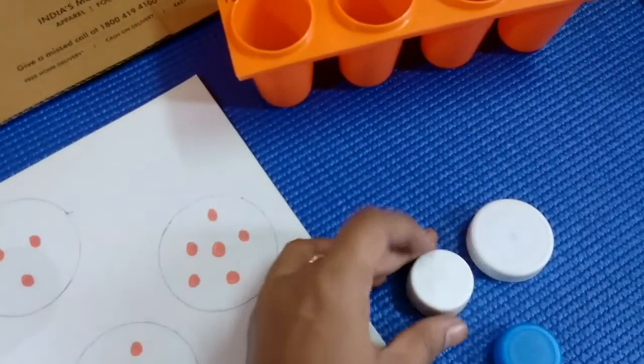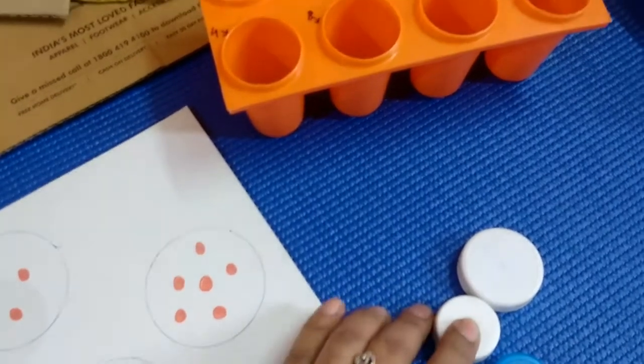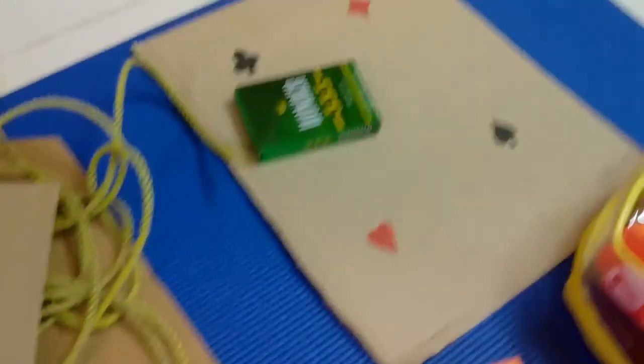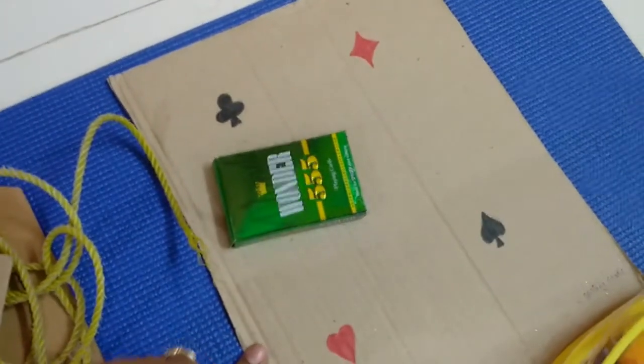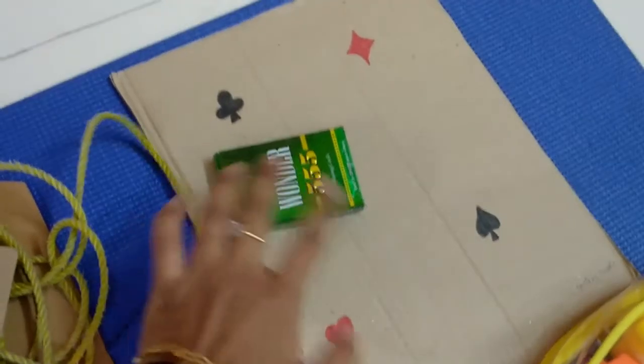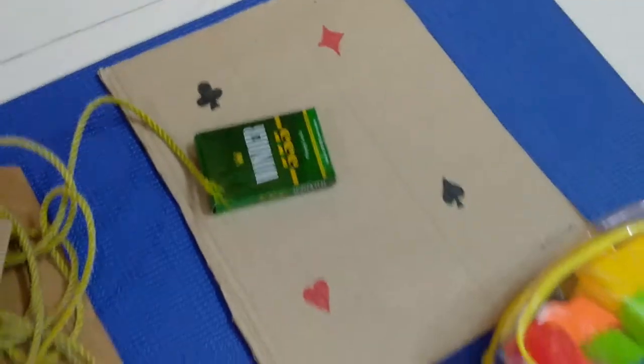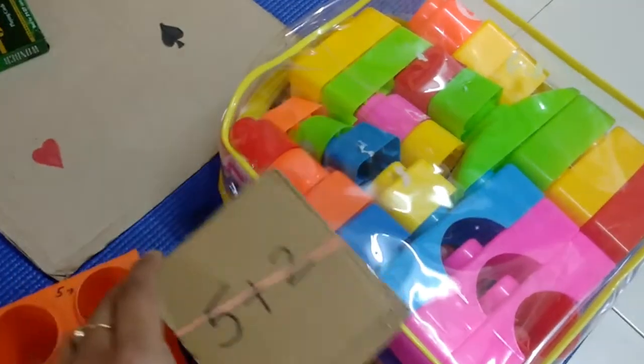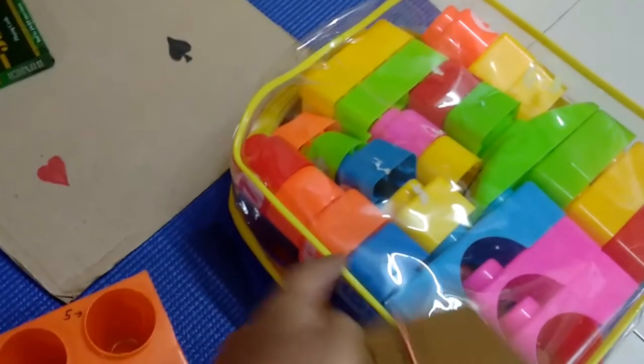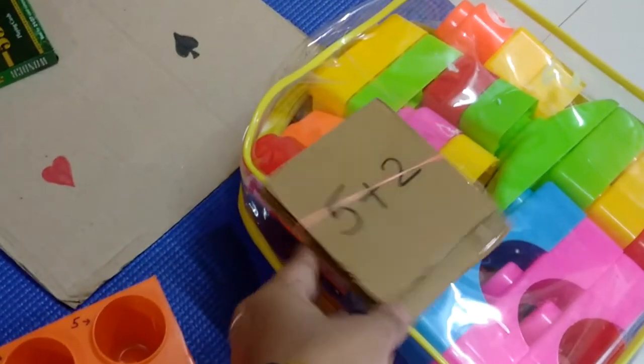These are bottle caps for some free play and artwork, using these bottle caps for stamping work. These are a pack of cards—the activity is to sort the cards according to shape and color. These are building blocks with additional cards, so we'll be doing counting using the blocks as well as addition.